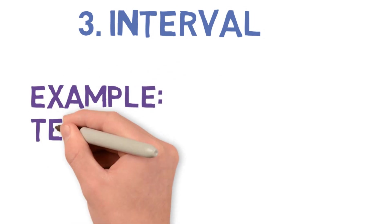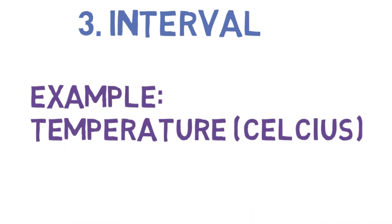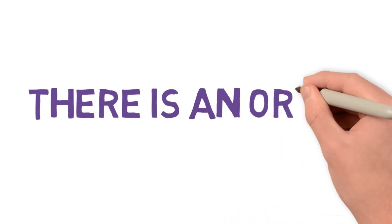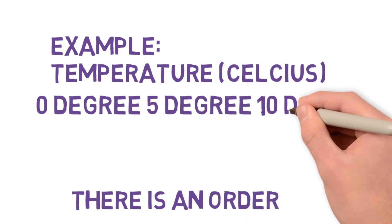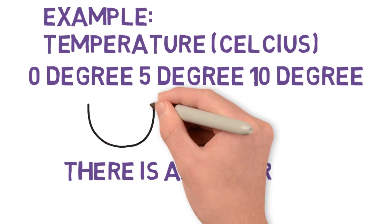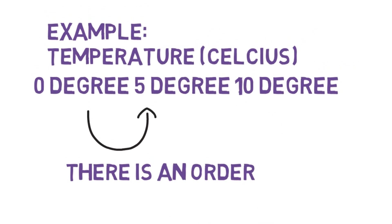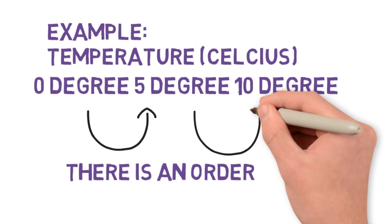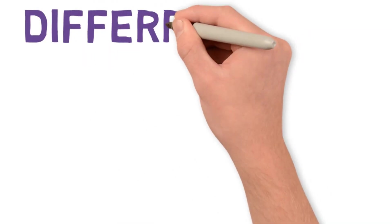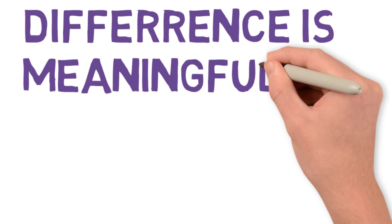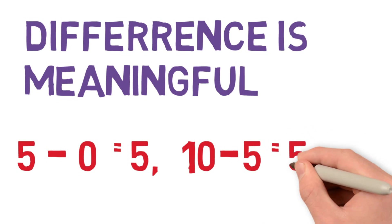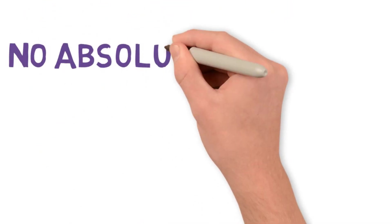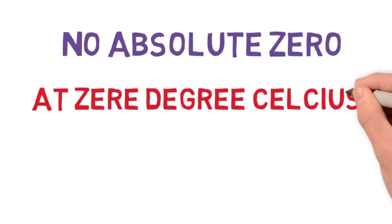The third type is interval. An example is temperature, which can be measured in Celsius. So there is an order here. If you look at zero degree, five degree, or 10 degree, this can be put in an order from zero to five and then comes 10. And the difference is meaningful in this case. Five minus zero would be five, and 10 minus five would be five. No absolute zero for this data type. At zero degree Celsius, a temperature still exists.